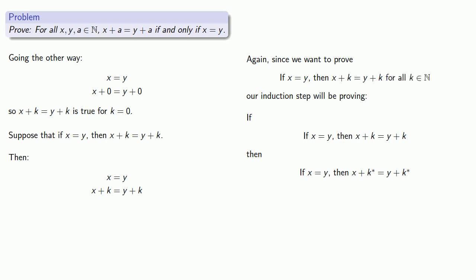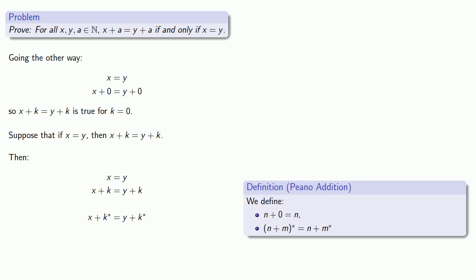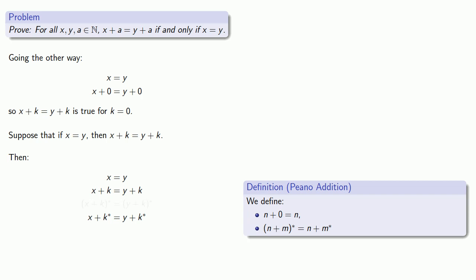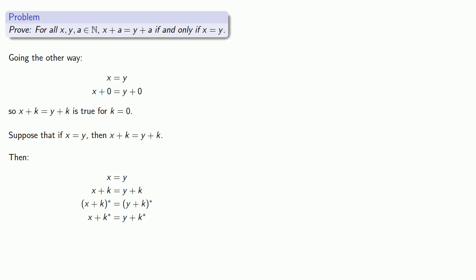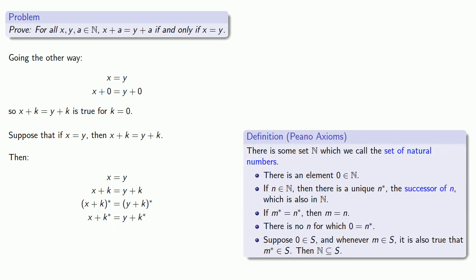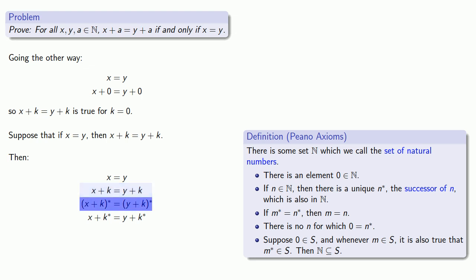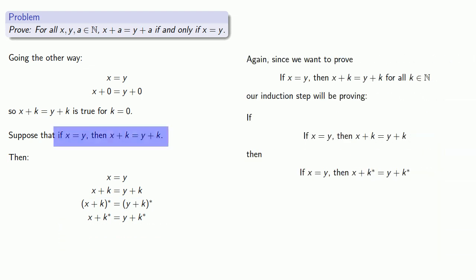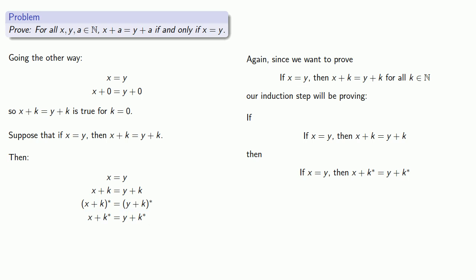Let's put our destination down: we'd like to conclude that x plus k* is equal to y plus k*. Definitions are the whole of mathematics — all else is commentary. x plus k* is the same as the successor of x plus k. Since this is a definition, that allows us to go back one step. Our final link is through the axioms: for any natural number, the successor exists and is unique. So when we go from x plus k to the successor of x plus k, we're allowed to do that by the axioms. And that completes the proof of the second part of the biconditional.